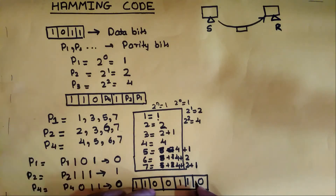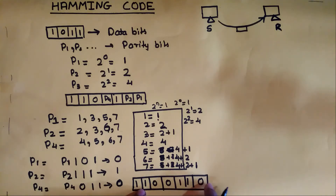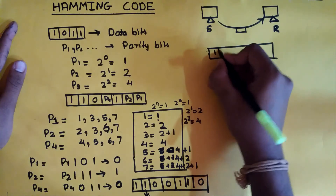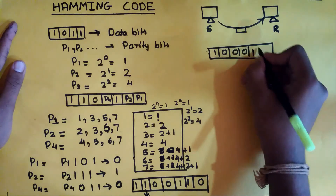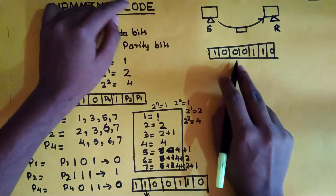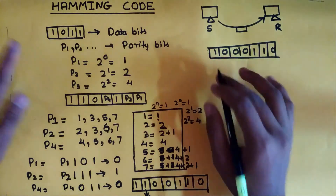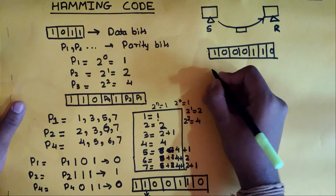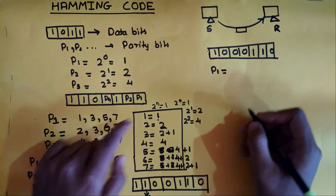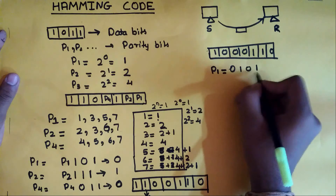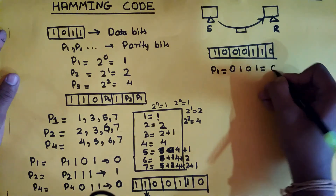Now we will send this data to the receiver side with an error introduced so we can verify error detection. We replace the 6th position bit (counting from the right) with 0. So the receiver gets: 1, 0, 0, 0, 1, 1, 0. The receiver then recalculates the parity bits. For P1, looking at positions 1, 3, 5, 7: values are 0, 1, 0, 1 — that's even parity, so the receiver's P1 is 0.